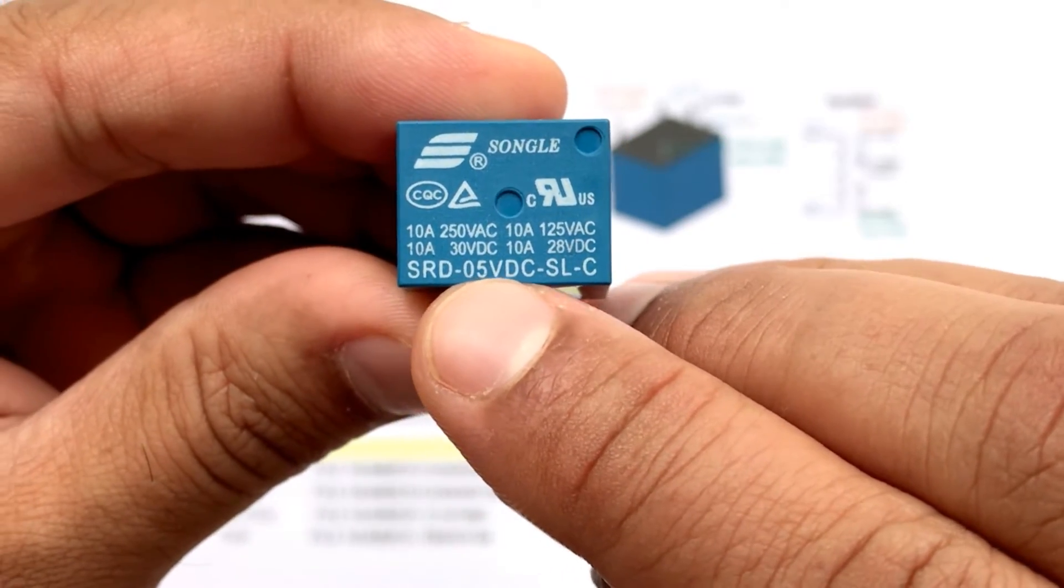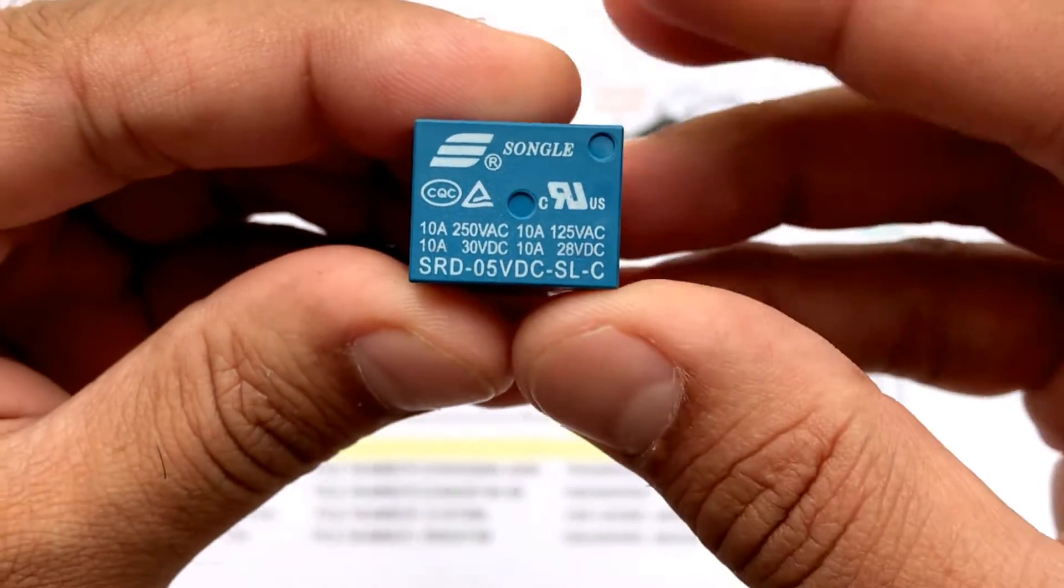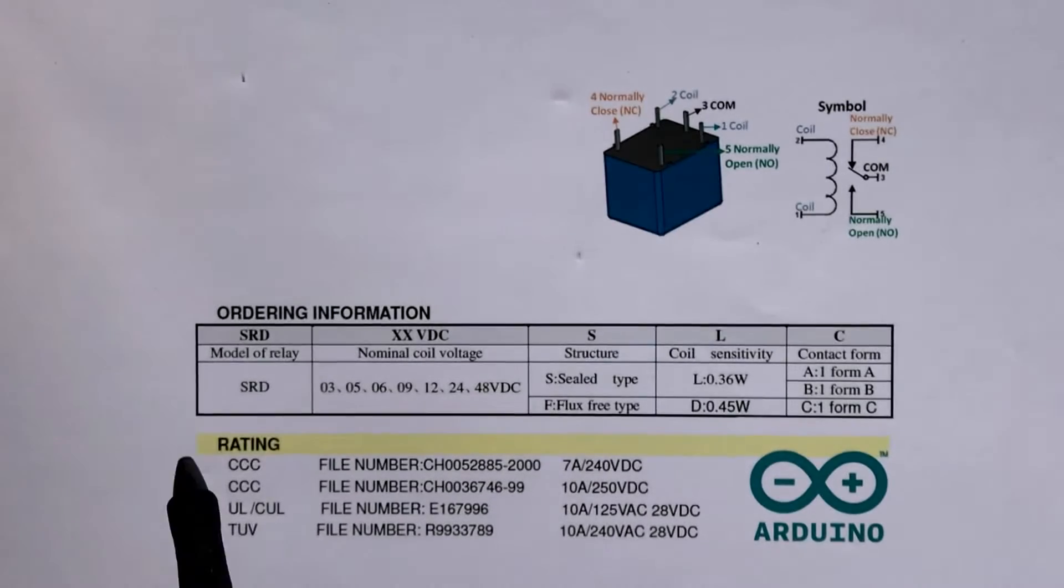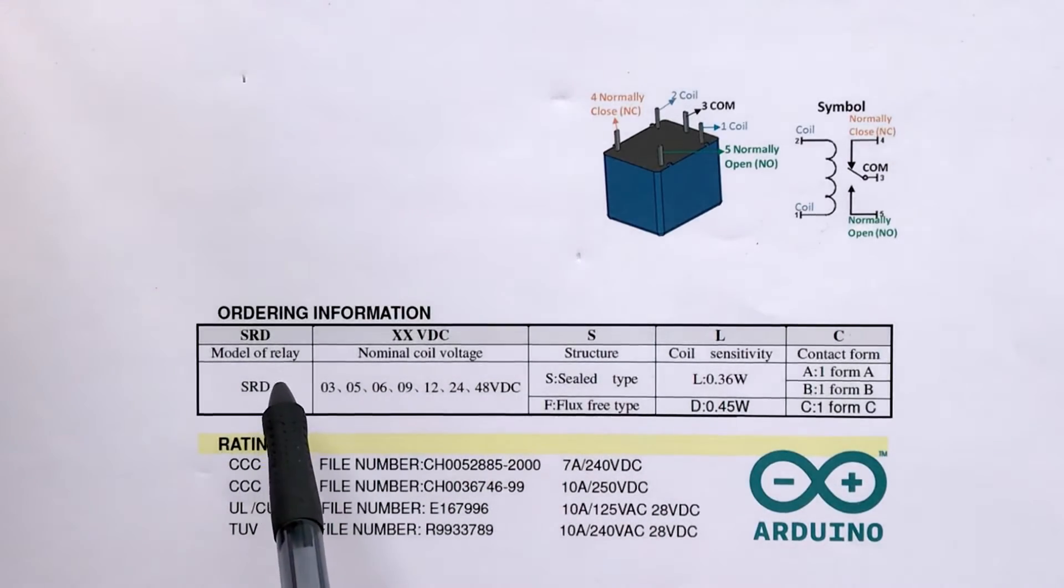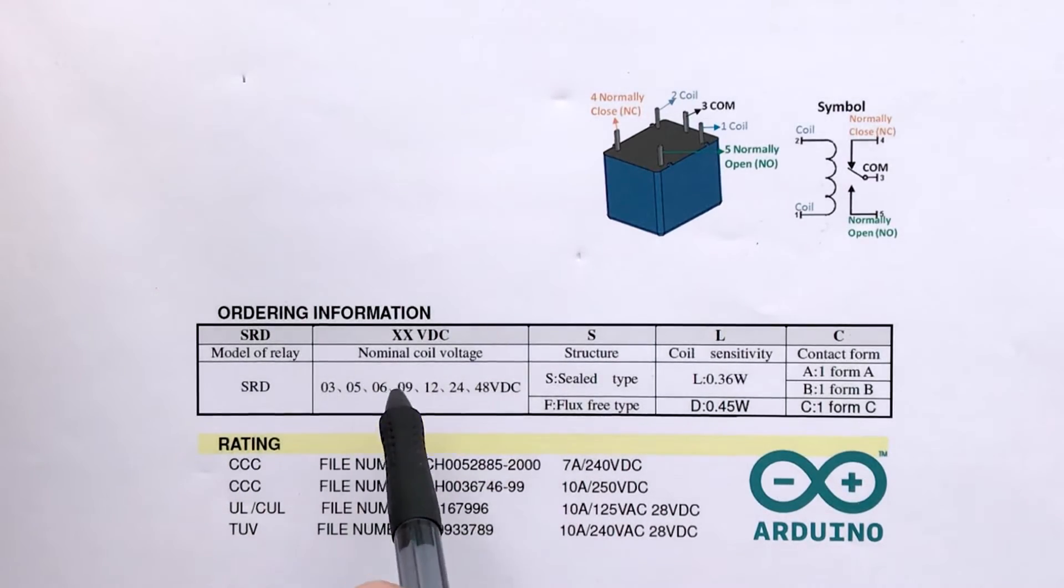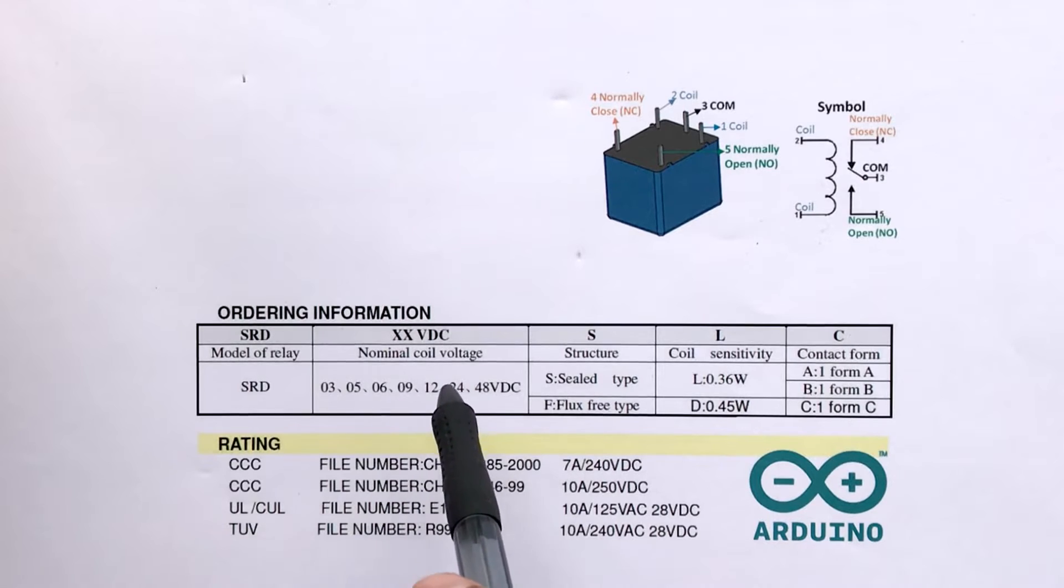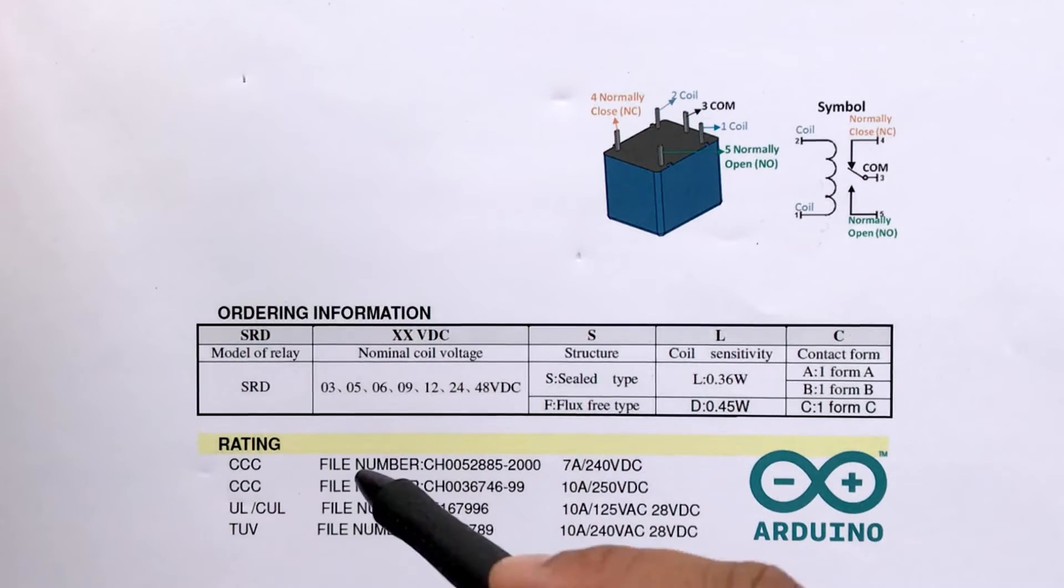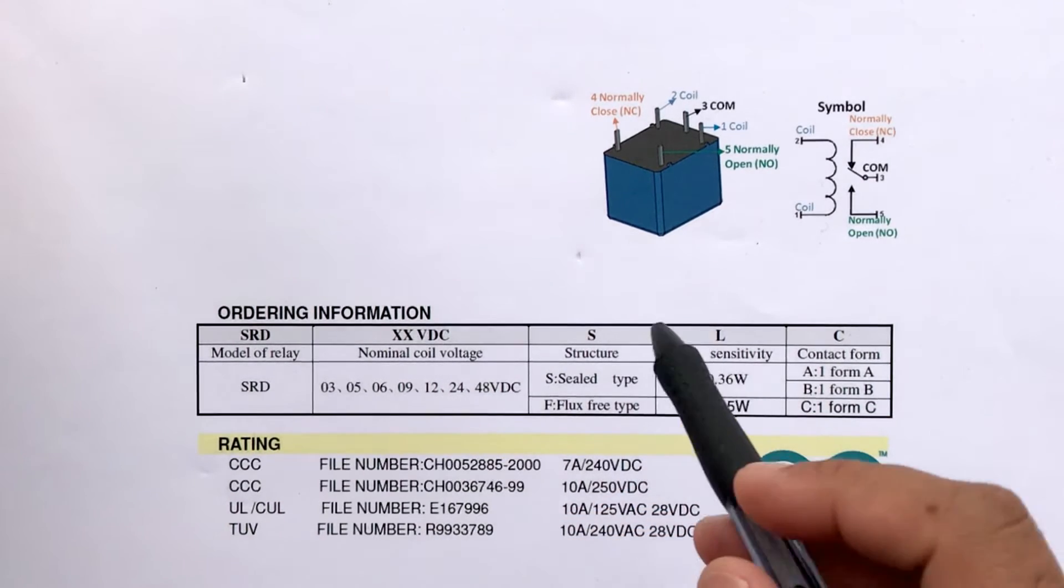Finally, the bottom bit says SRD 5V DC SLC. SRD is the model of the relay. 05V DC, also known as nominal coil voltage or relay activation voltage, is the voltage necessary for the coil to activate the relay.